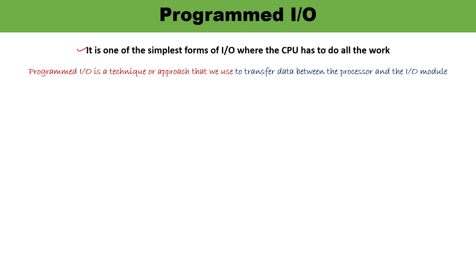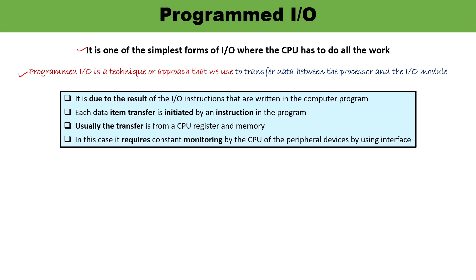I have already discussed this in the previous video briefly. Here, the CPU has to perform each and every task. This is the simplest approach where information or data transfer happens between the processor and the I/O module. There is a program written into the computer, and this all occurs due to the instructions written in that program. When each and every instruction is executed, accordingly data transfer is initiated and completed.